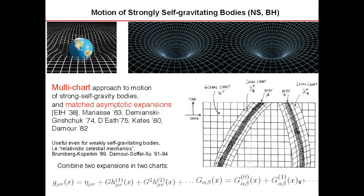The basic problem is we are not talking about test particles — we are talking about black holes, which are the most strongly self-gravitating objects in the universe. They deform the geometry of spacetime by 100%, so you cannot say it's a small deformation of flat spacetime.